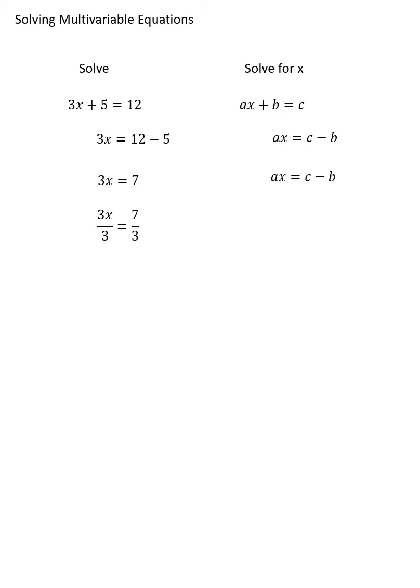Back to the equation on the left, if we wanted to solve for x, it would make sense to divide both sides by 3. But if we wanted to solve the equation on the right for x, wouldn't it make sense to divide both sides by a? We don't know what a is, but that doesn't prevent us from dividing both sides by a to get the x by itself.